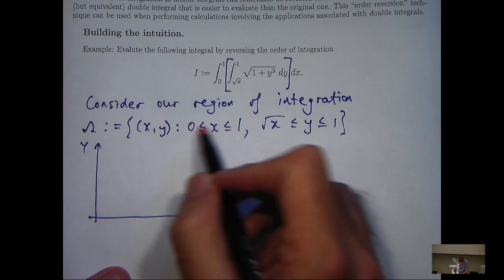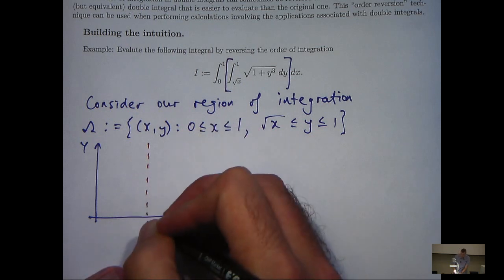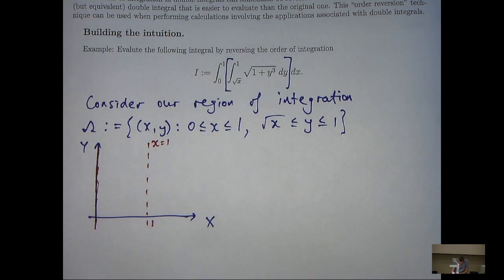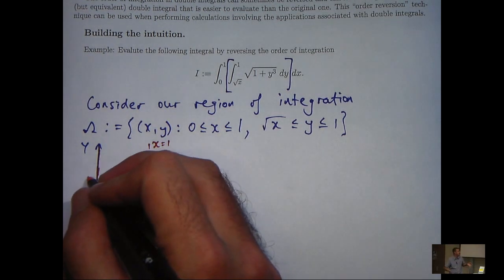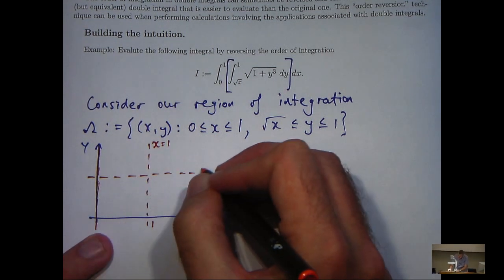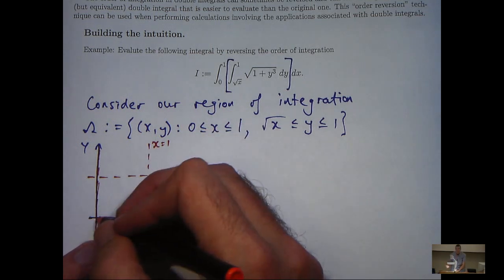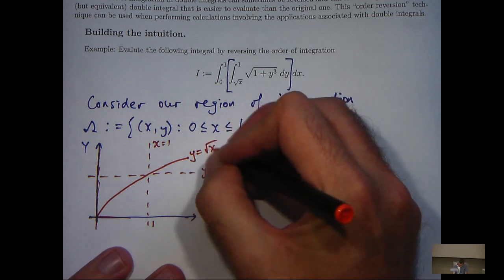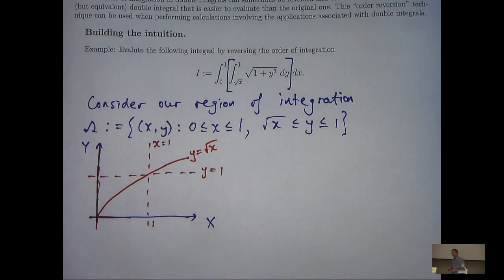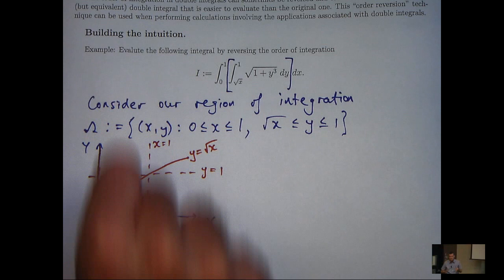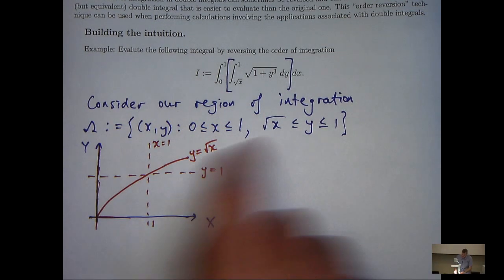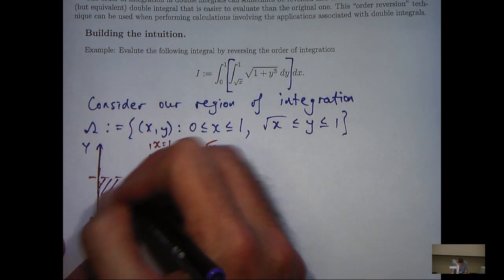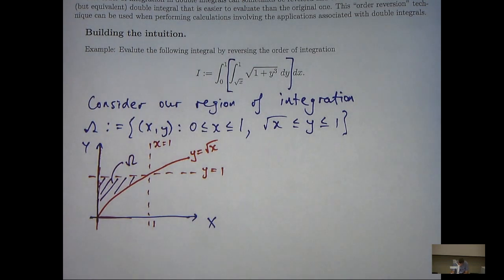I'm going to draw our two-dimensional region omega in the xy-plane. Let's draw in the lines x equals 1 and x equals 0 — x equals 0 is just the y-axis. Let's draw in the lines y equals 1 and y equals root x, which will be a curve like this. Now we need to determine which region omega represents. x is between 0 and 1, representing this infinite strip, and the y-points lie below the horizontal line y equals 1 but above the curve root x. So our region of interest, omega, lies here.